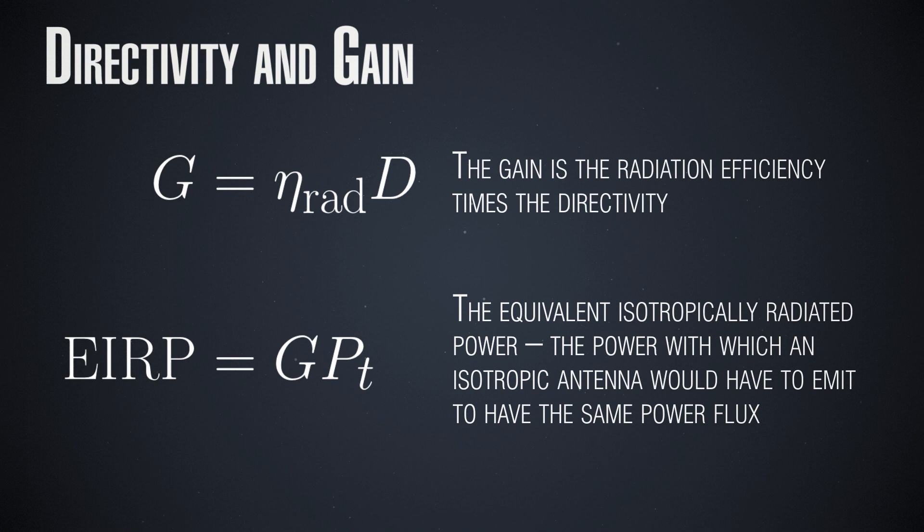This equivalent antenna, which is isotropic and would substitute our antenna for a much larger total power input, is called equivalent isotropic radiator. As the name suggests, it is equivalent to ours in terms of power flux at our given direction, but isotropic.